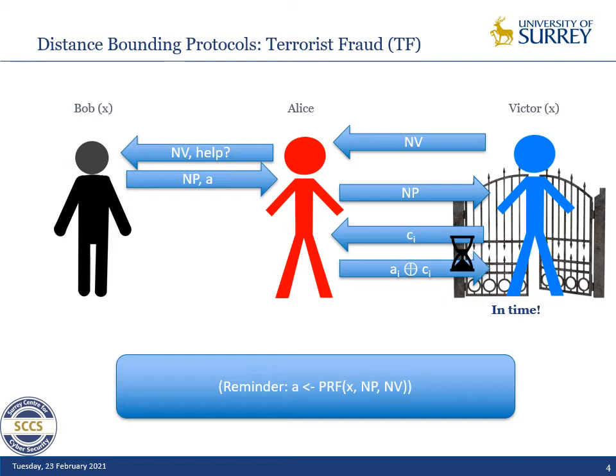Then for all the challenges, because Alice knows A, she can reply with the correct response AI XOR CI. Remember that A is a PRF keyed with X on NP and NV.